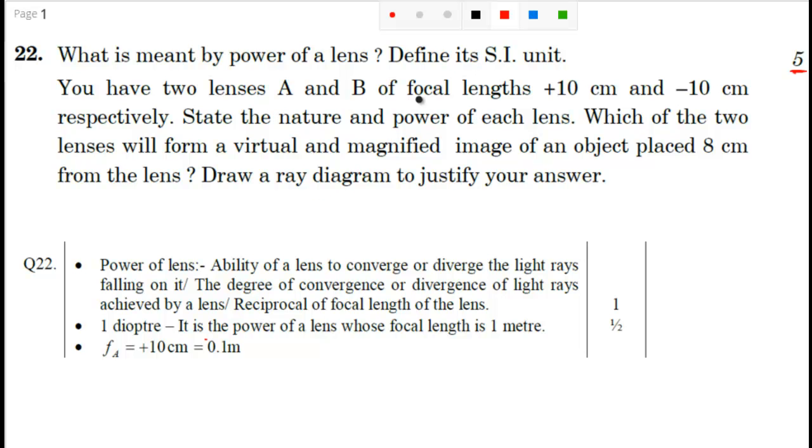You have two lenses A and B of focal lengths plus 10 cm and minus 10 cm. That's a hint guys. If the focal length is plus 10 cm, that means it is positive, and if it is positive, it will be your converging lens, that means it is your convex lens.